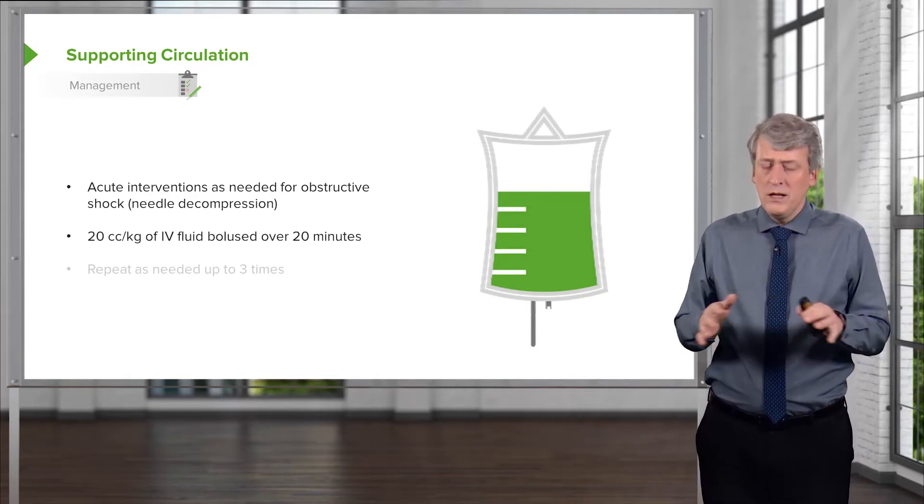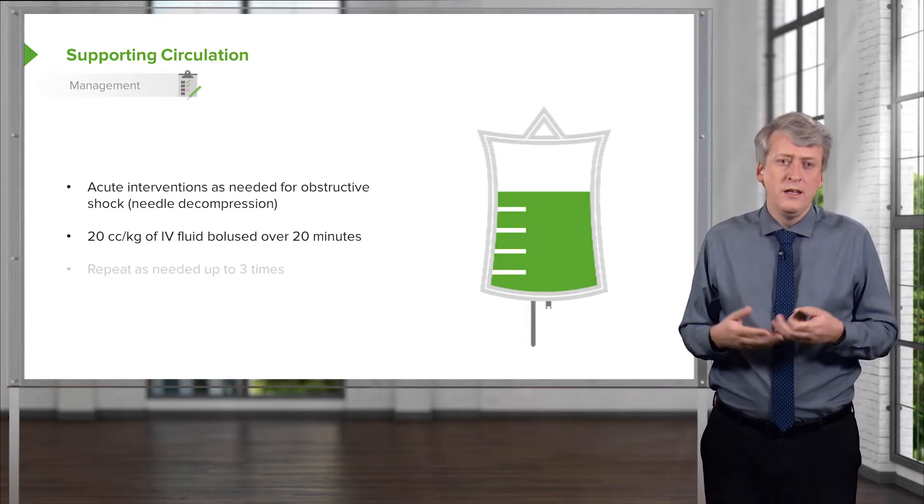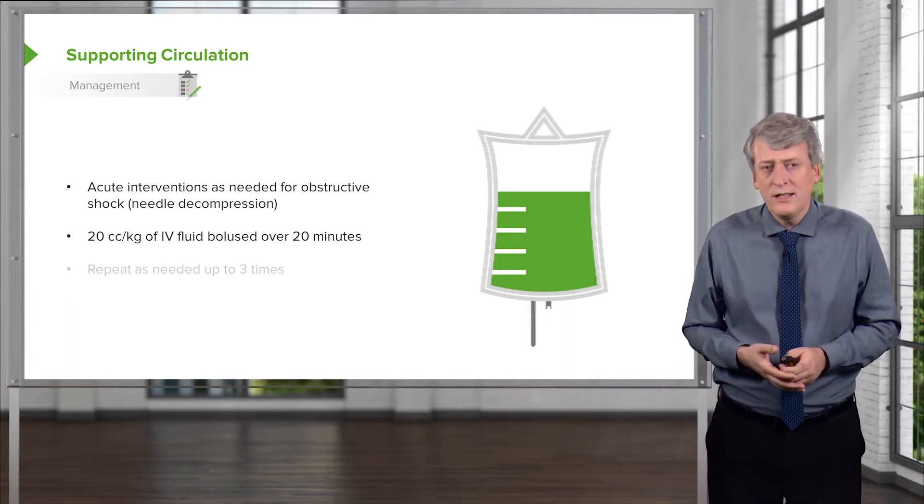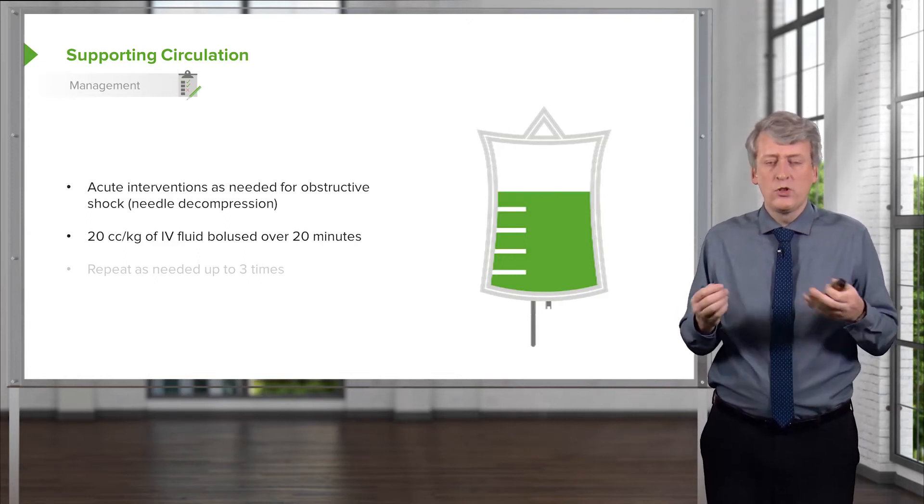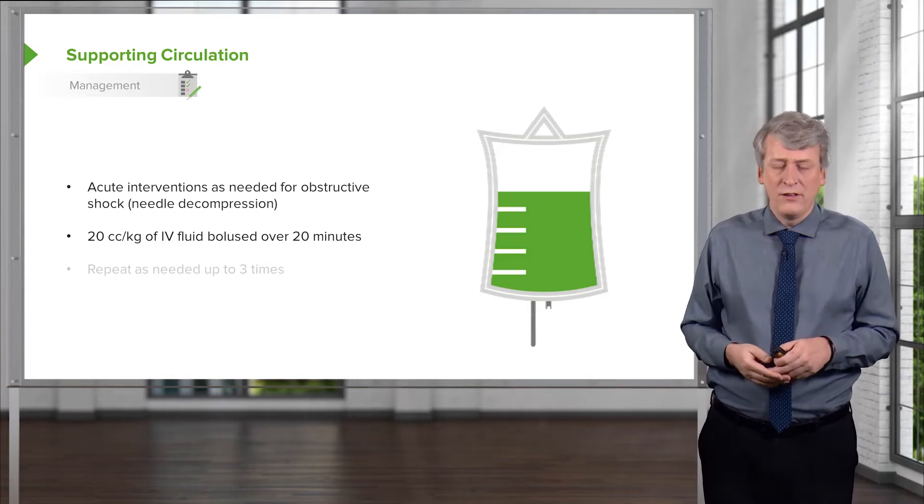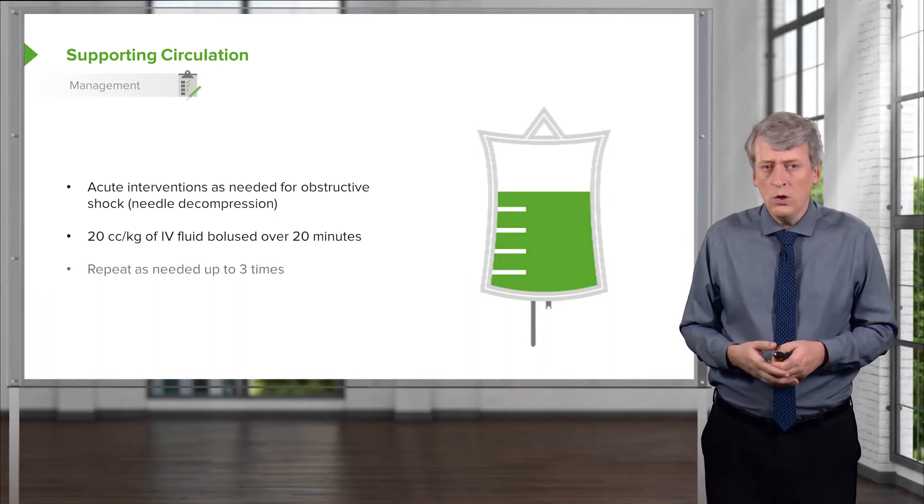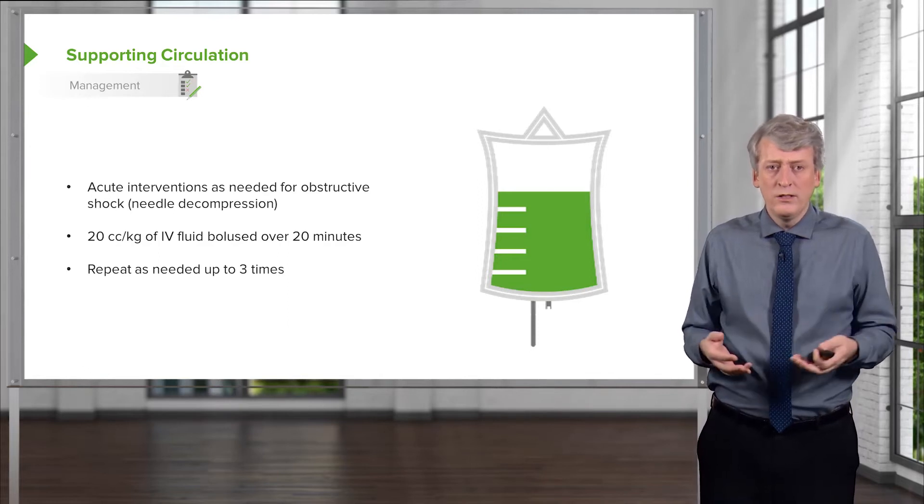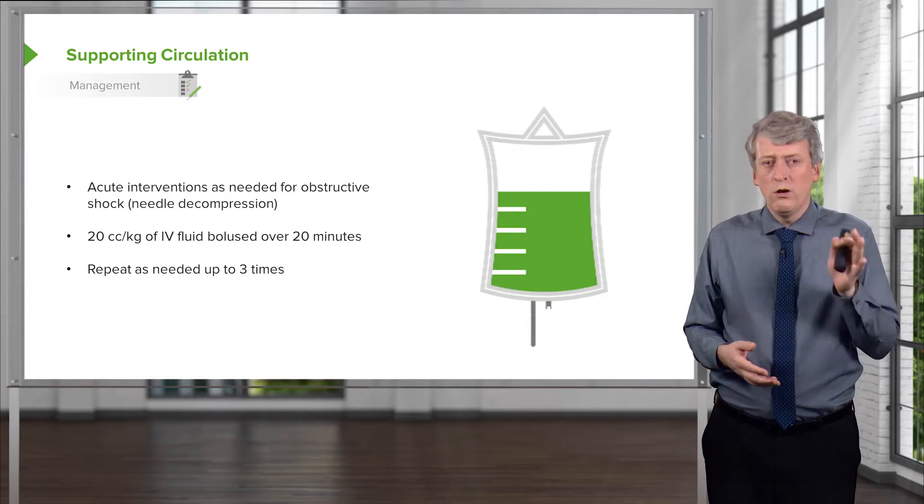After those immediate interventions, we typically would give boluses and the amount of bolus is 20 cc per kilo. You should memorize that number. And we usually give that over 20 minutes, though you can certainly give it faster in a patient with acute hypovolemic shock. We may repeat these boluses up to usually once, sometimes twice, rarely three times.